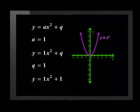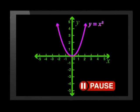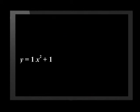So the new function is y equals x squared plus 1. Let's take a look at the parent graph of y equals x squared. What do you think the new graph, the graph of y equals x squared plus 1, will look like? I think the whole graph is going to shift up by one unit.